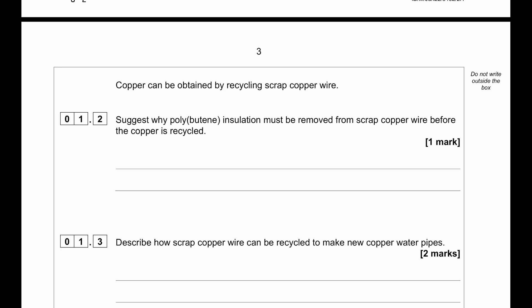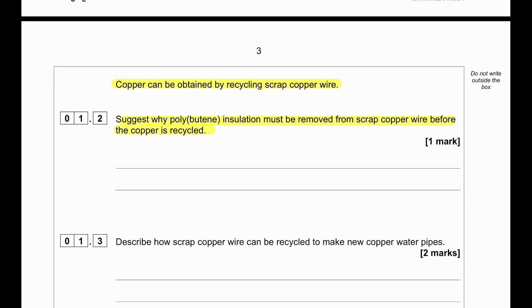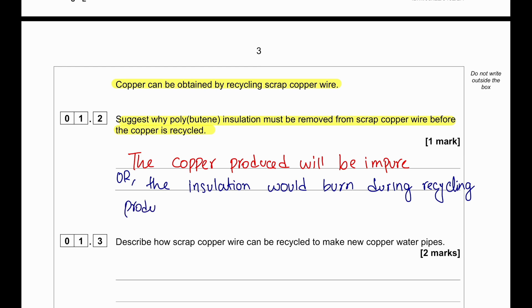Copper can be obtained by recycling scrap copper wire. Suggest why polybutene insulation must be removed from the scrap wire before the copper is recycled. If you burn with the polybutene insulation, the copper that we will be producing will be impure. It will be mixed with carbon. Otherwise the copper would be produced as a mixture. You can say it would be a mixture, or we can say that the insulation would burn during the recycling process creating toxic fumes.